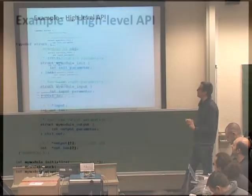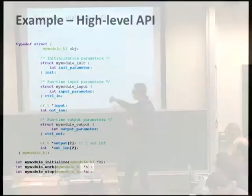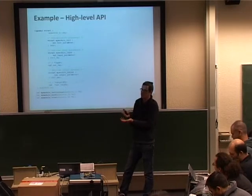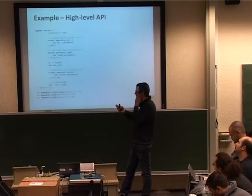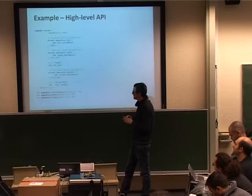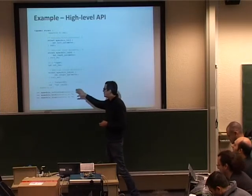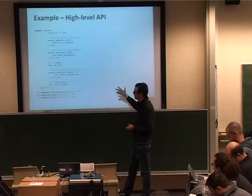At the high-level interface, we specify three functions that you typically see in all frameworks: an initialize function, then a work function which is called periodically to perform the DSP, and then a stop function. The idea is that the DSP designer has to implement these functions calling the low-level API functions.